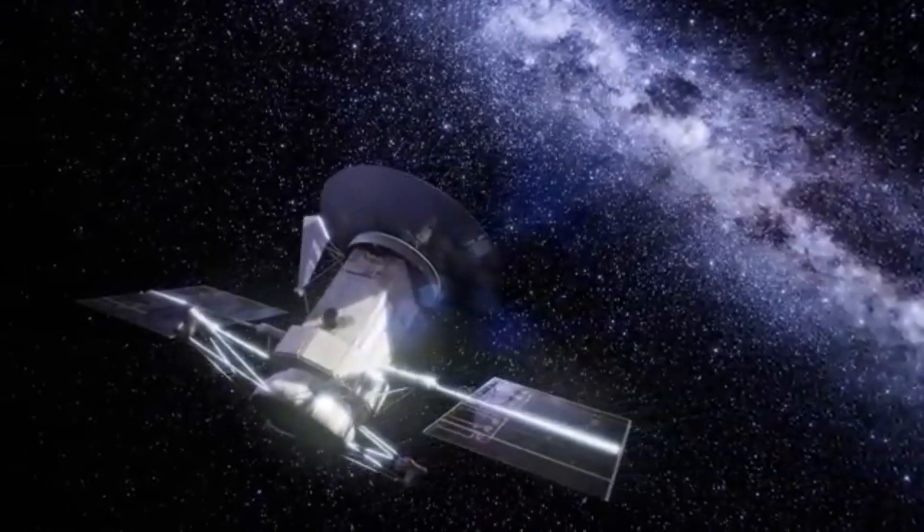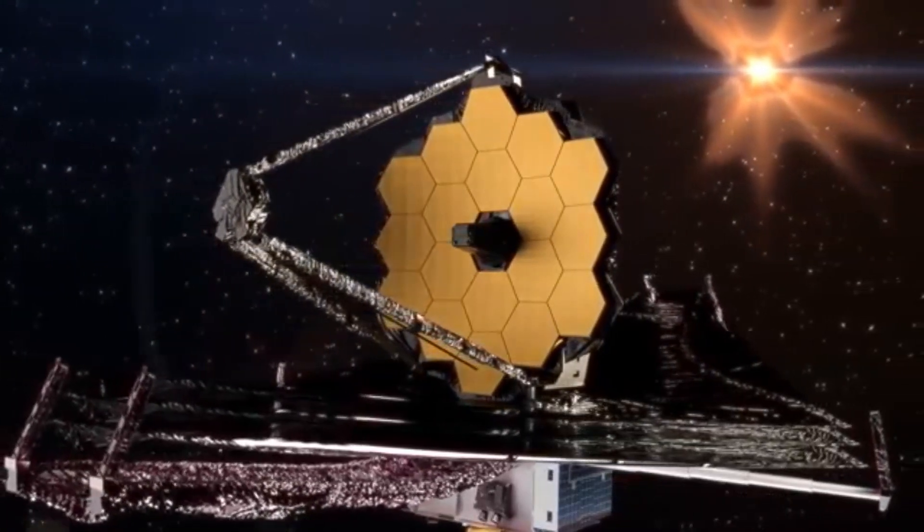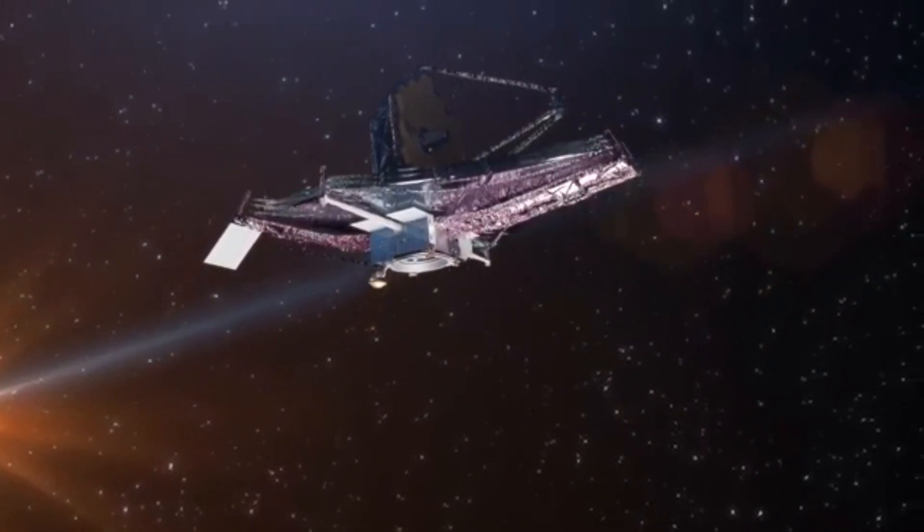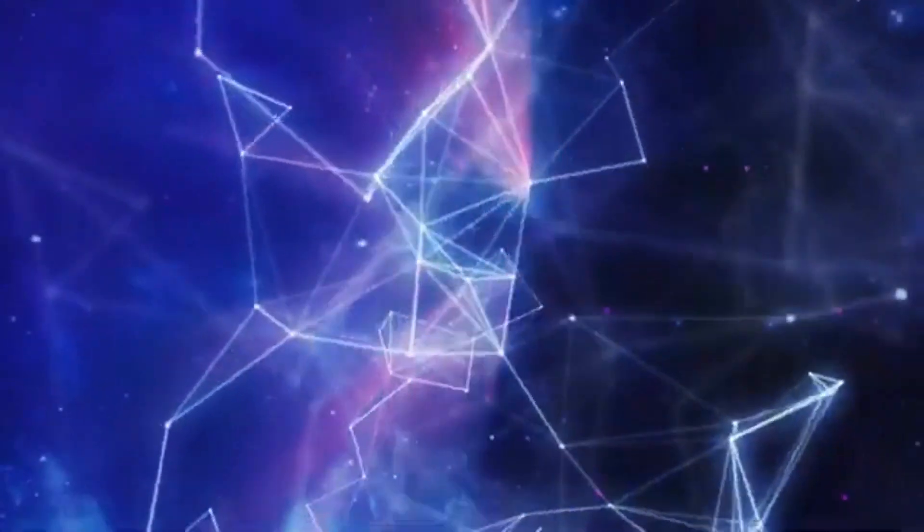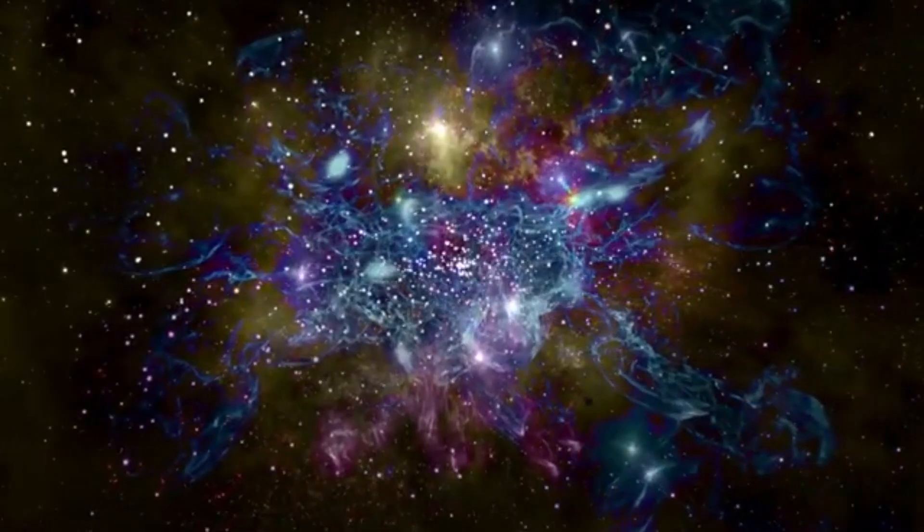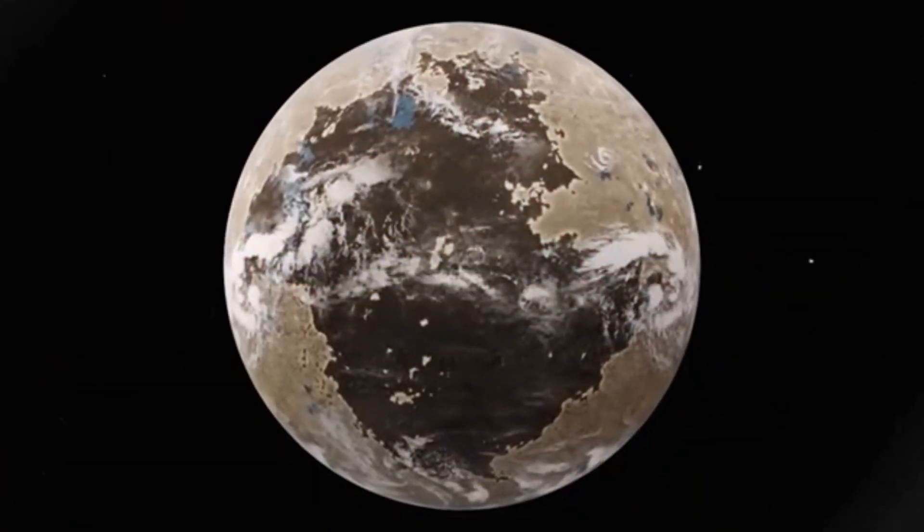The James Webb Space Telescope, with its ability to analyze the infrared spectrum, is expected to play a key role in identifying such biosignatures. By studying the light from an exoplanet as it passes in front of its star, the telescope can determine the planet's chemical composition. Finding molecules linked to life, such as oxygen or water vapor, would suggest the planet might support life.